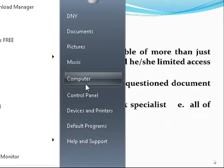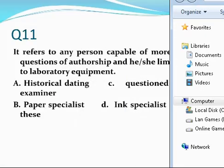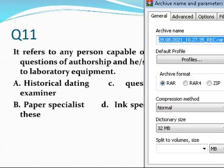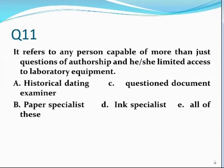Question number eleven. It refers to any person capable of more than just questions of authorship and who has limited access to laboratory equipment — historical dating, questioned document examiner, paper specialist, ink specialist. The correct answer is Charlie: questioned document examiner.